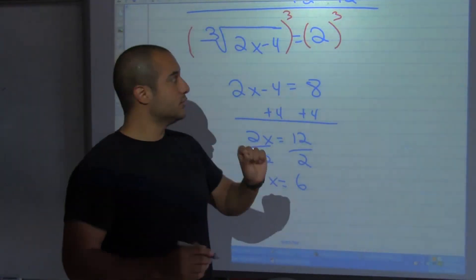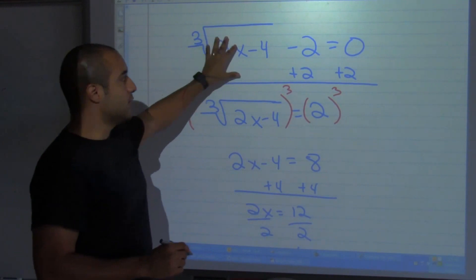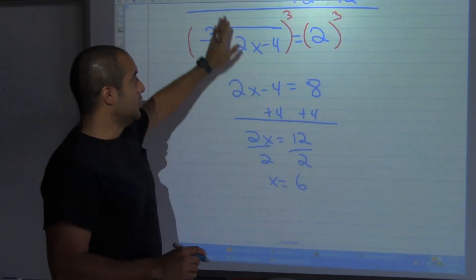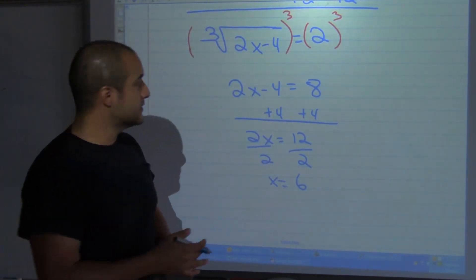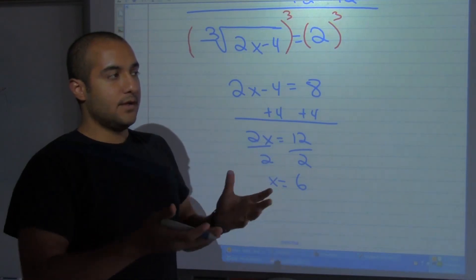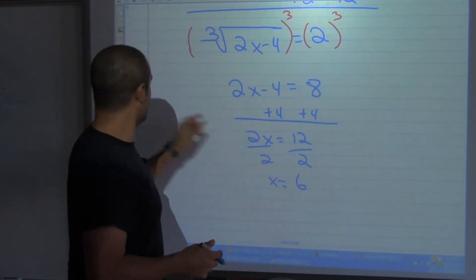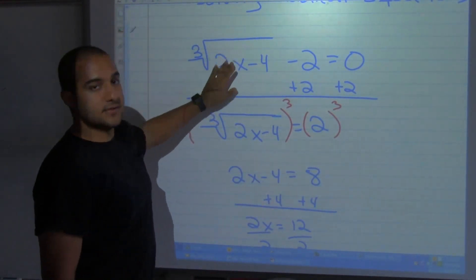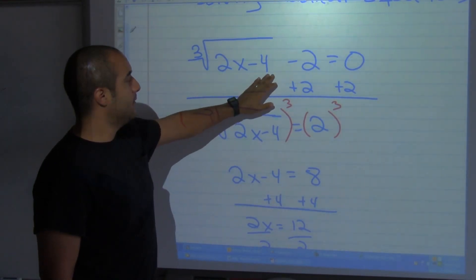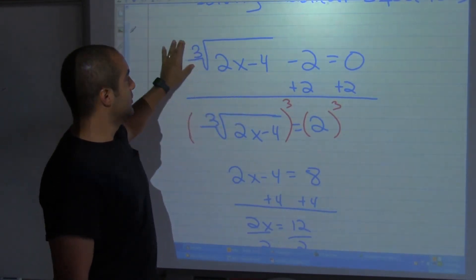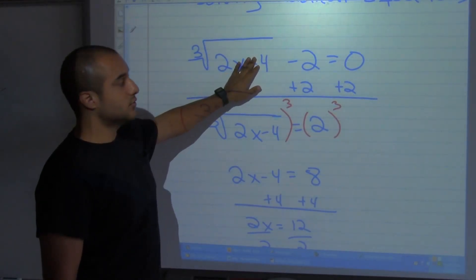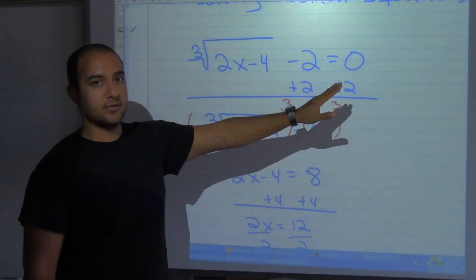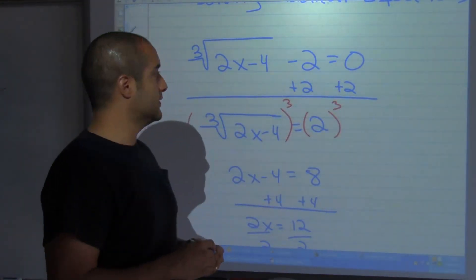When you're solving radical equations, you have to check your answers. Once you solve for your variable, you need to check for any extraneous solutions — that means solutions that don't actually exist. Here I substitute 6 in: 2 times 6 is 12, 12 minus 4 is 8, the cube root of 8 is 2, and 2 minus 2 is 0. So this does check out.